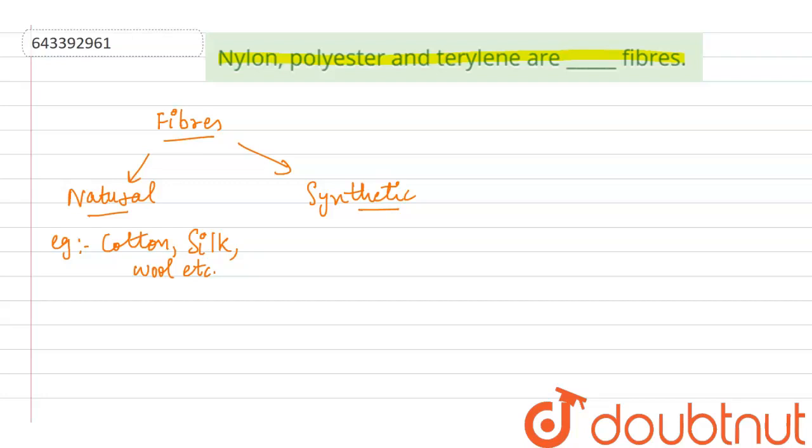Examples of synthetic fiber: nylon is the first commercially synthesized fiber. It is made from coal, water and air.